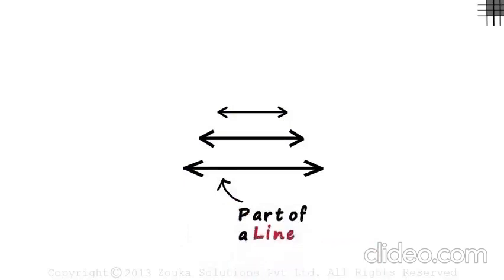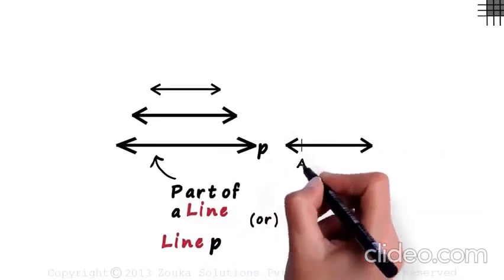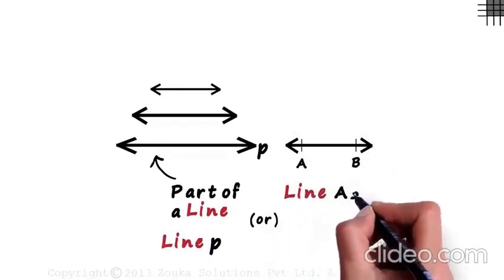Lines are generally named with lowercase letters. This can be called line P, or we can draw a line like this and mark two points A and B. This will be called line AB. Line AB can also be written as AB with a tiny line drawn over AB.